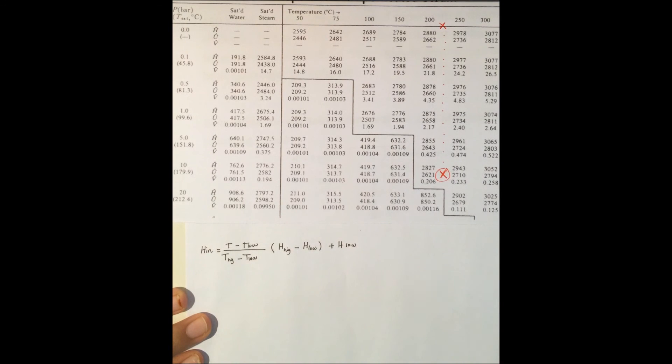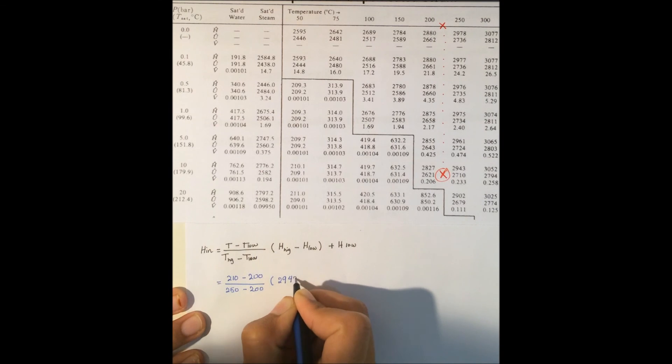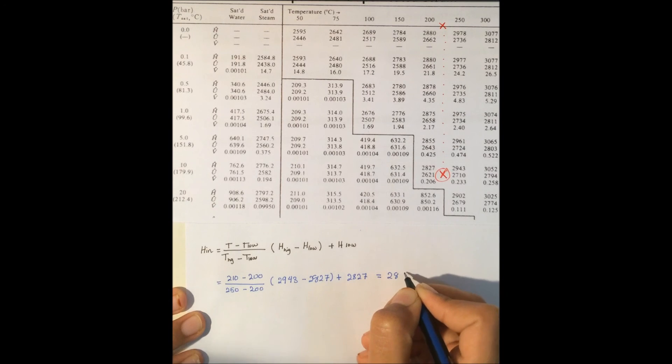The result is 2850 kilojoules per kilogram.